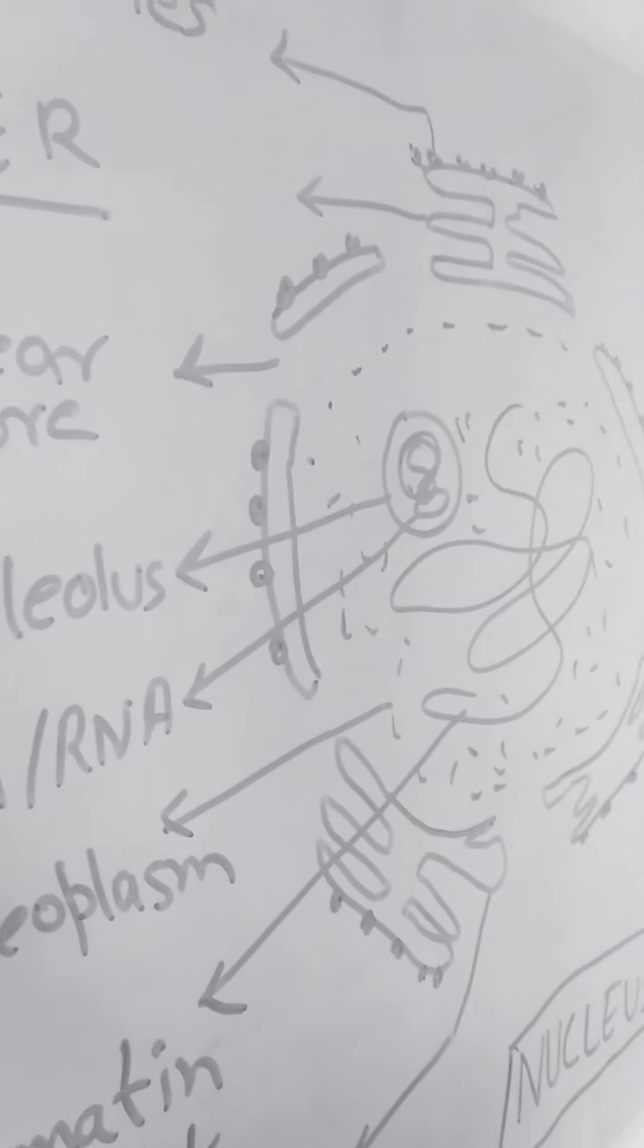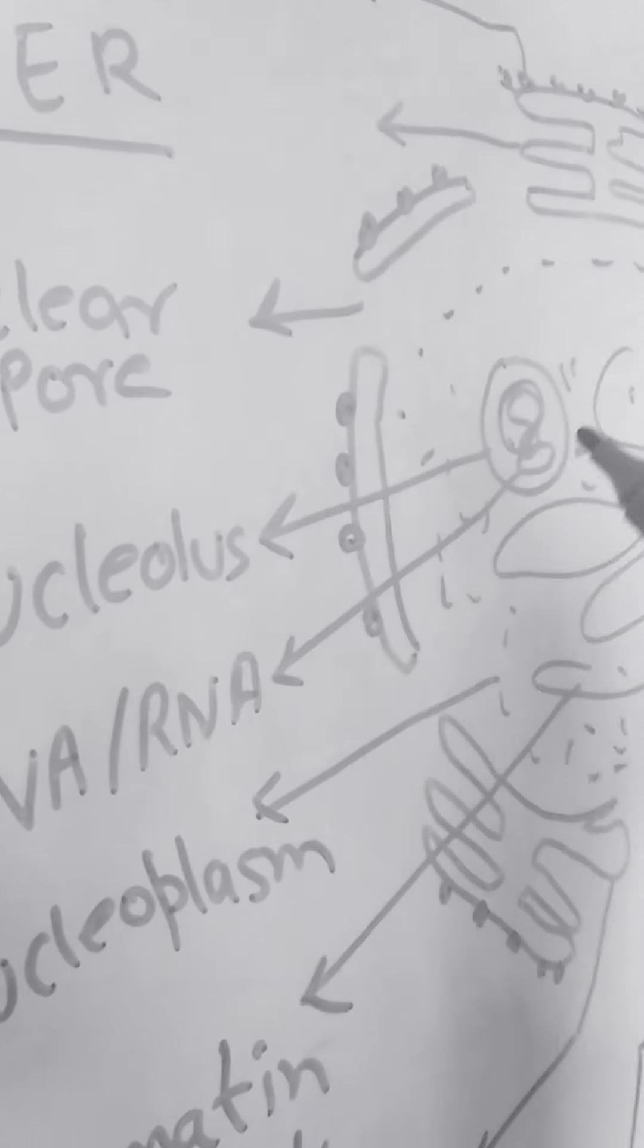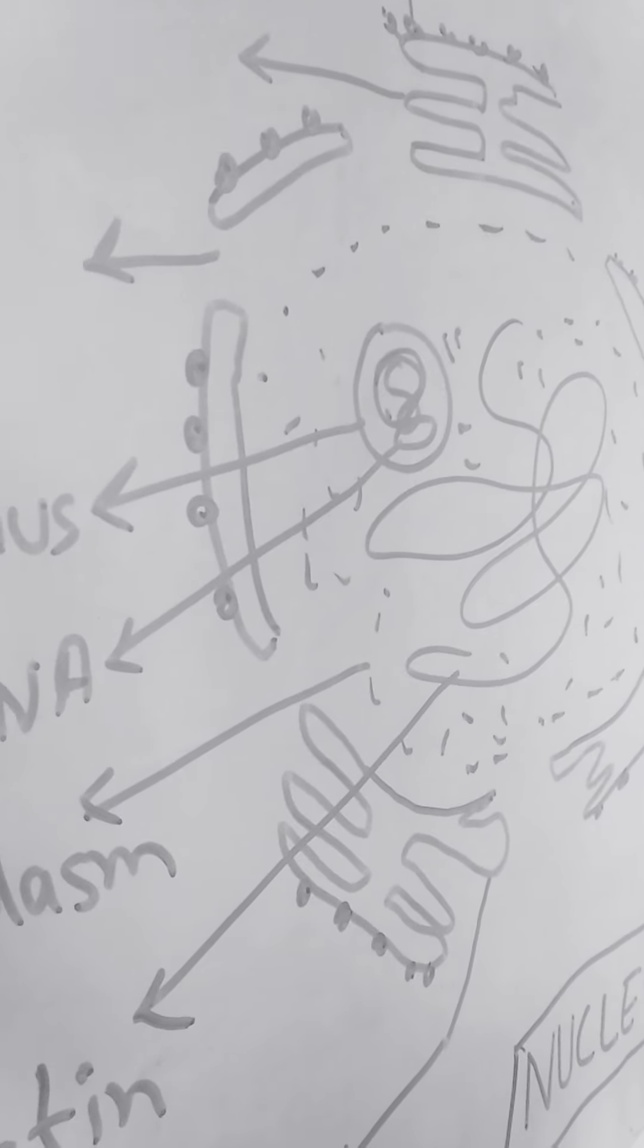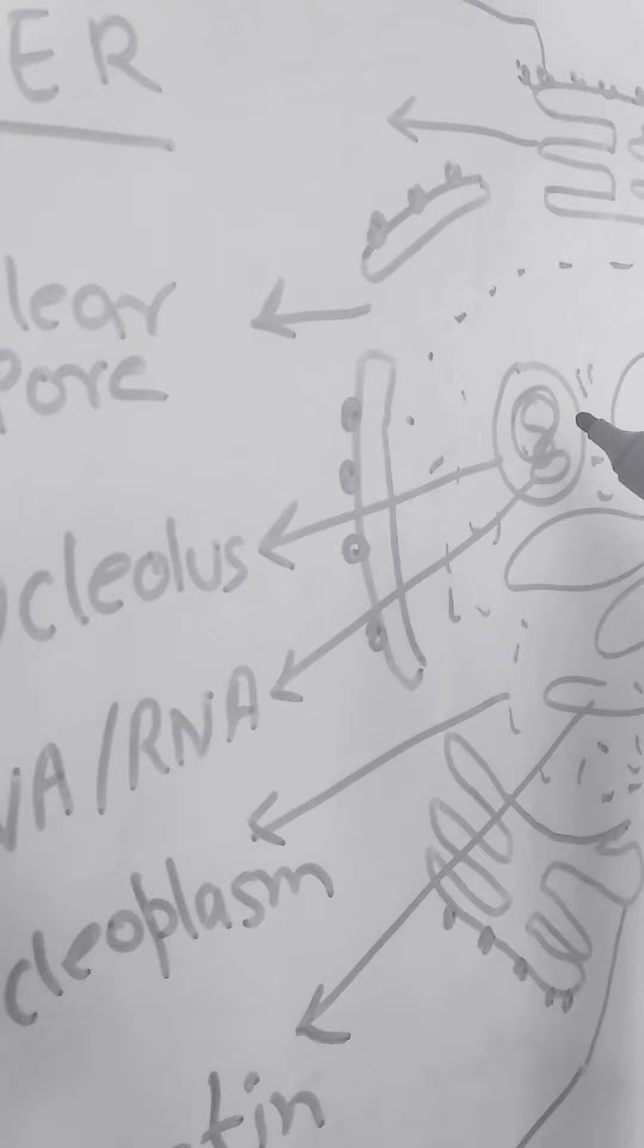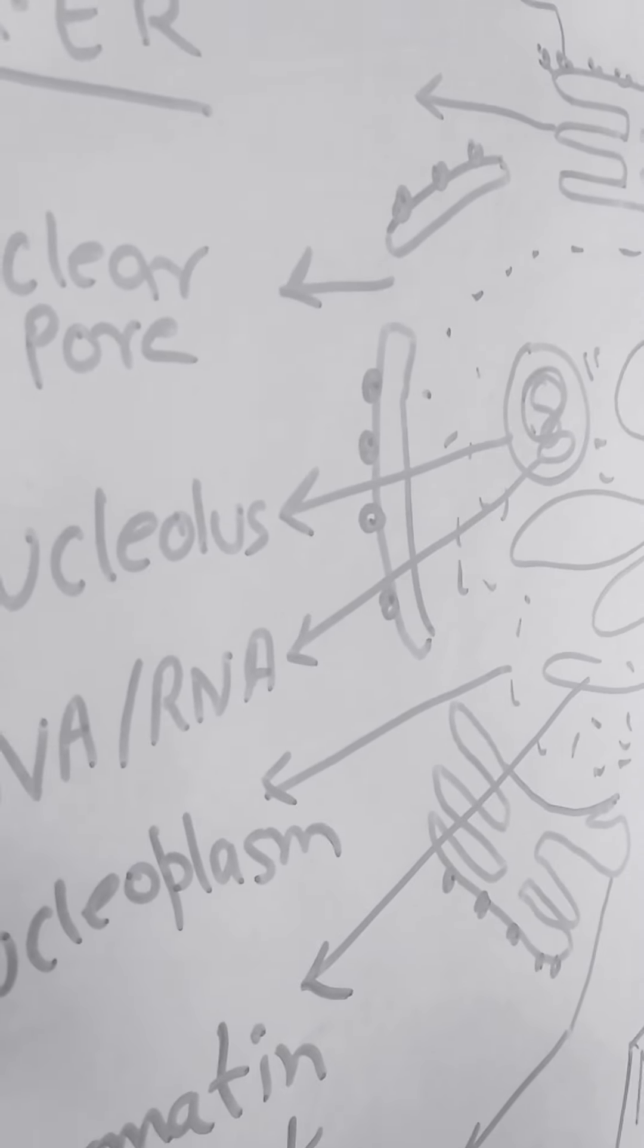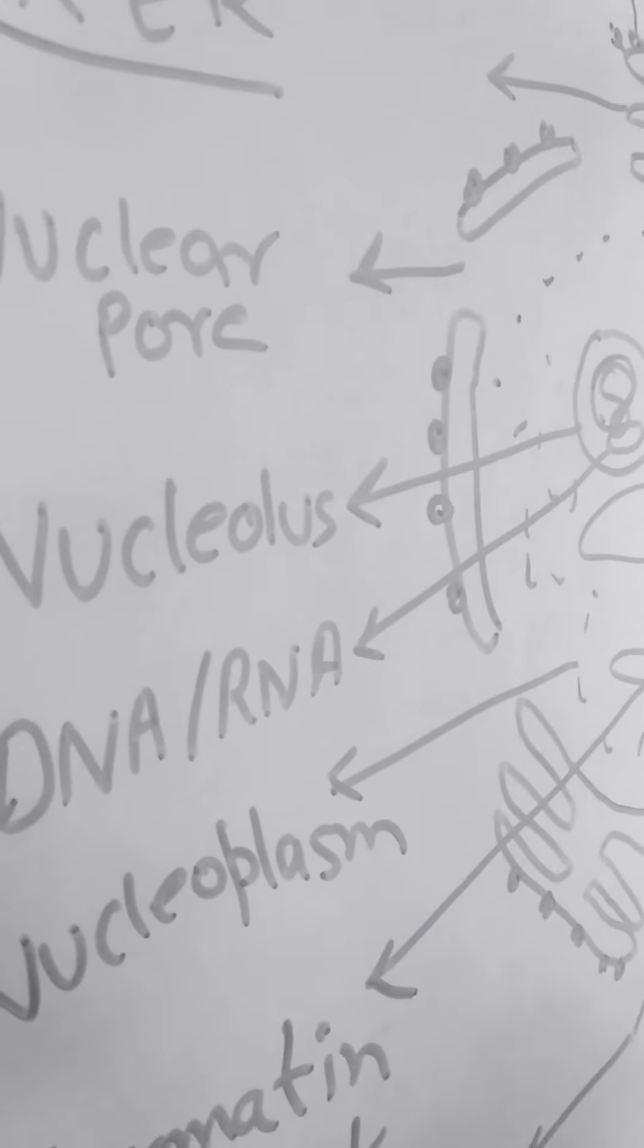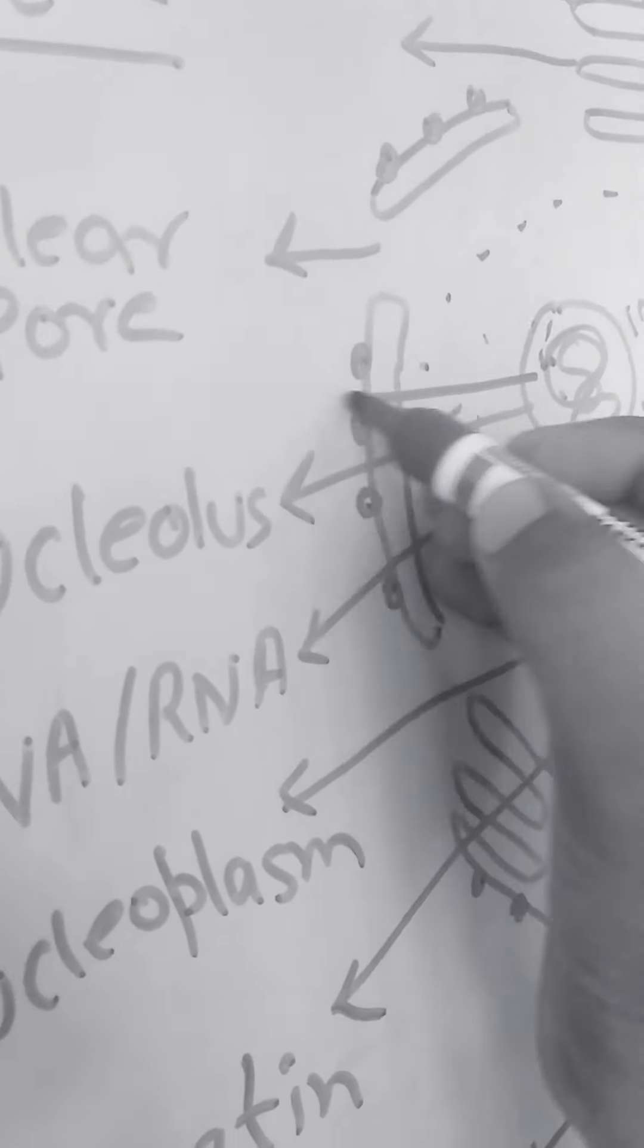Nucleolus is a small structure present inside the nucleus. Nucleolus contains genetic material DNA and RNA, which helps in formation of proteins. Enzymes are also present here, found inside the nucleolus.